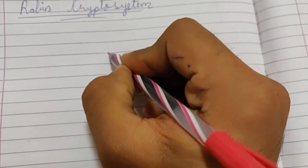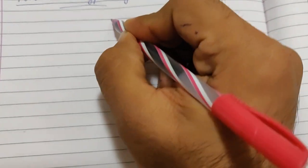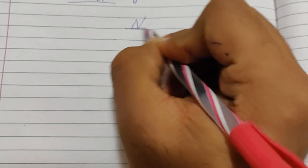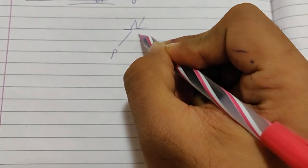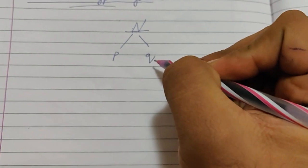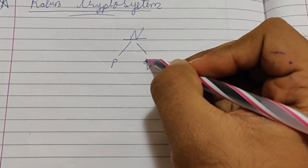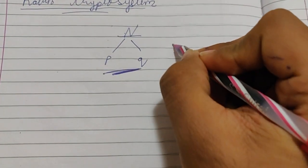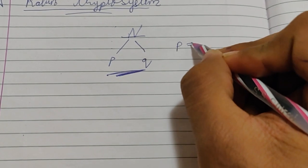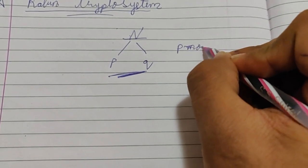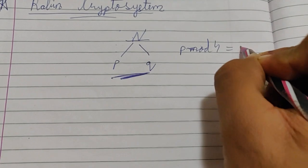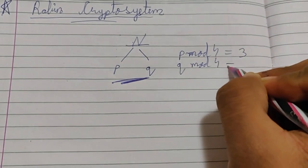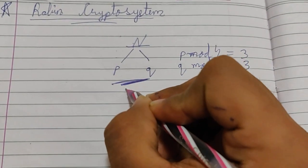We have N, which is divided into P times Q — as we know in RSA, P times Q gives us N. The restriction in the Rabin cryptosystem is that P mod 4 must always equal 3, and Q mod 4 must always equal 3.